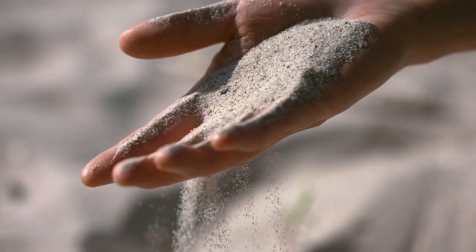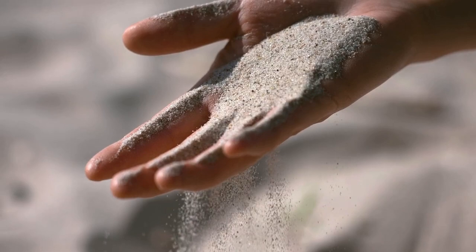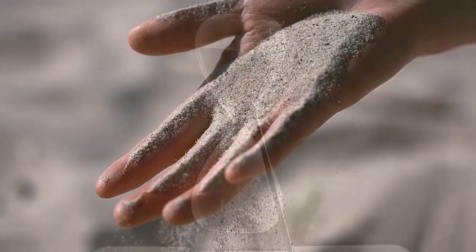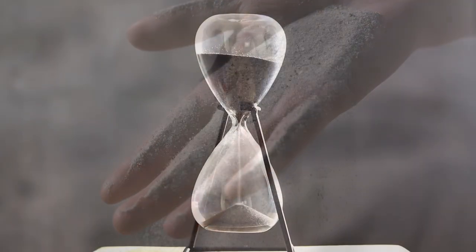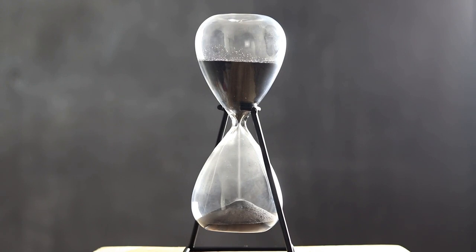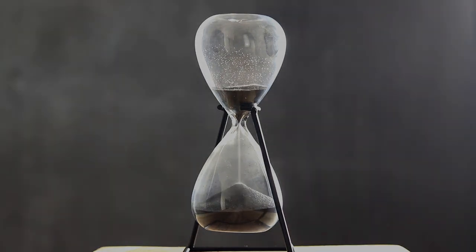To see the world in a grain of sand and heaven in a wild flower, to hold infinity in the palm of your hand and eternity in an hour. This is the first four lines of a poem by William Blake called The Auguries of Innocence.